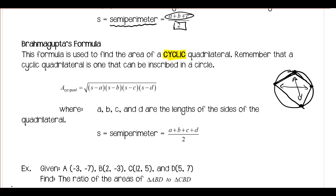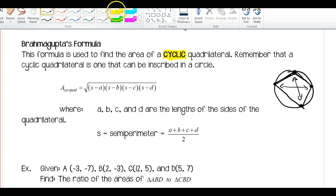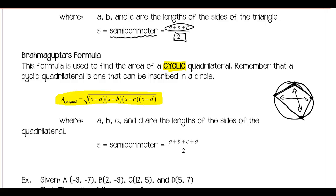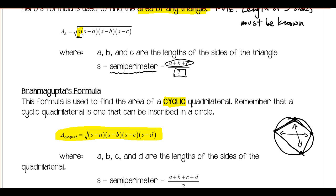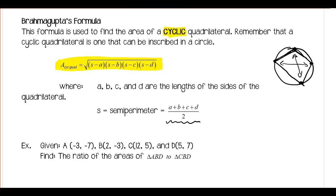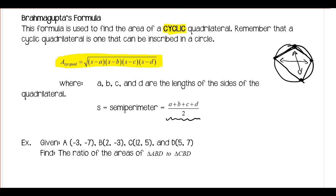If you're given that it's cyclic, or once you determine that it's cyclic, the area of a cyclic quadrilateral equals the square root of (S minus A) times (S minus B) times (S minus C) times (S minus D). Notice in this formula there is not that semi-perimeter by itself like in Heron's Formula. The semi-perimeter here is found by adding all four sides and dividing by two, then subtracting each side length and taking the square root. Let's move on to a couple of examples.